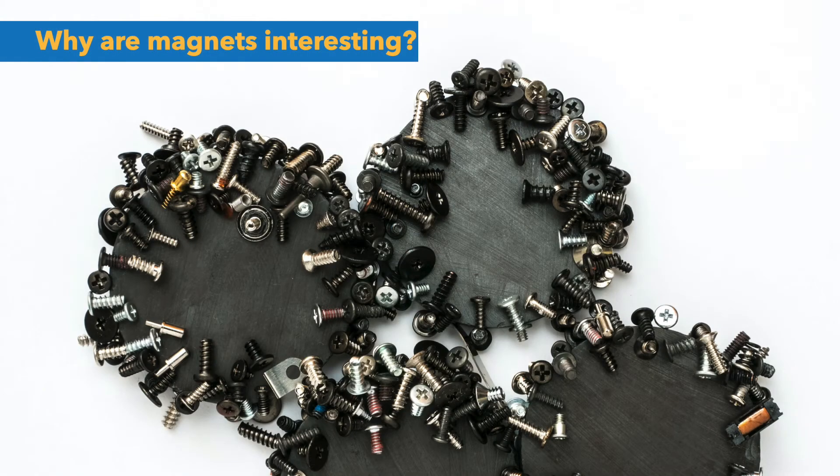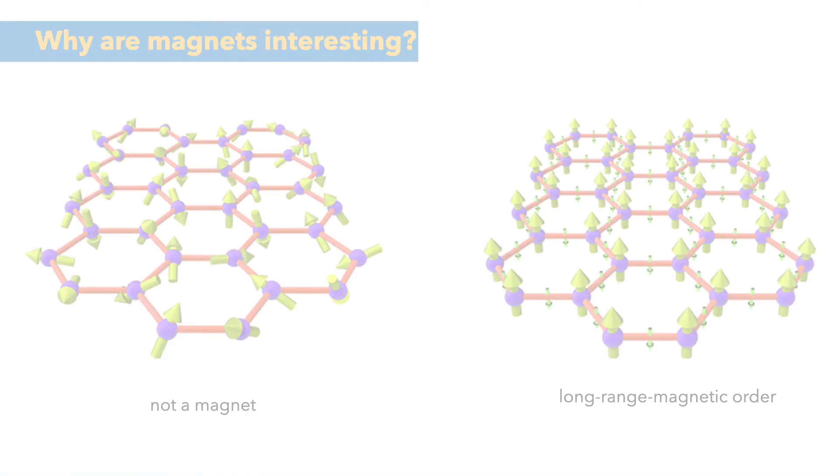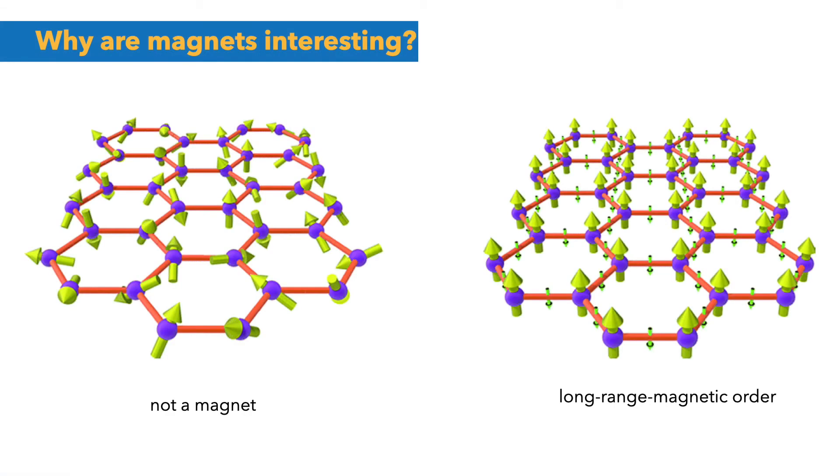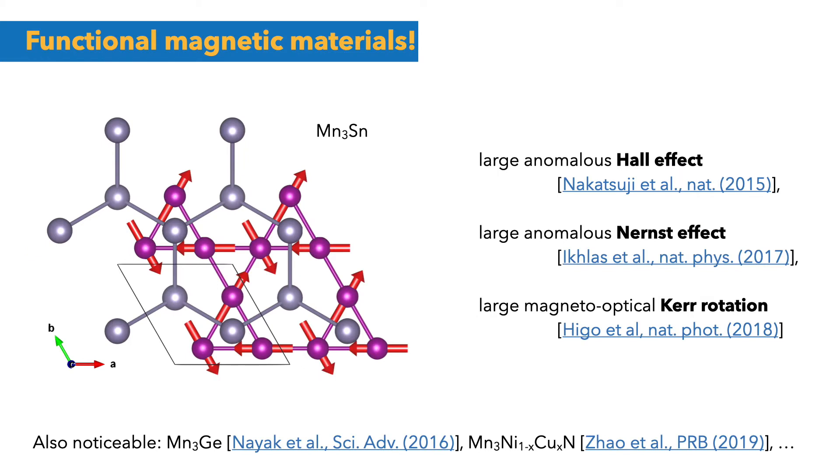Before we dive in, you may ask why magnets are interesting. Well, we often think of ferromagnets when we speak of magnets. But more generally, magnets are all materials where the magnetic moments carried by electrons align with each other. In other words, they have a long-range magnetic order. Depending on this order, magnets can have very useful applications.